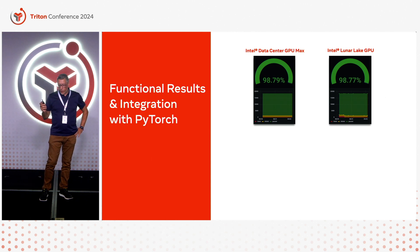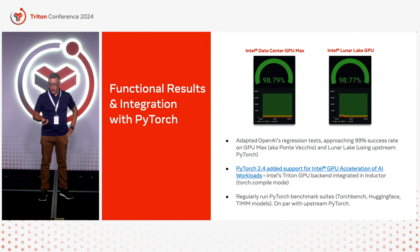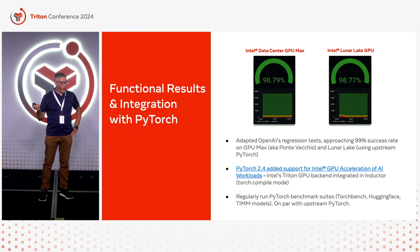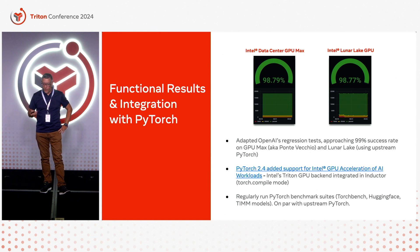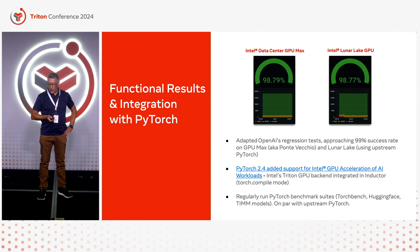For functional results, we are running on pretty much all the Intel GPUs available, and starting to run on future Intel GPUs as well. We have excellent results, approaching 99% on the Intel Data Center GPU Max, also known as Ponte Vecchio or PVC, and on the upcoming Intel Lunar Lake, a consumer-specific GPU. We have been able to adapt all the core tests and end-to-end PyTorch tests that OpenAI runs, running them all on our architecture.